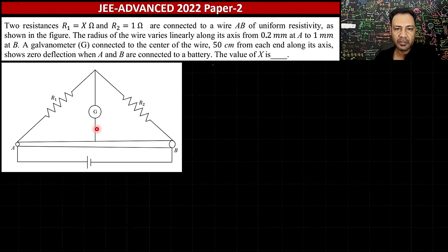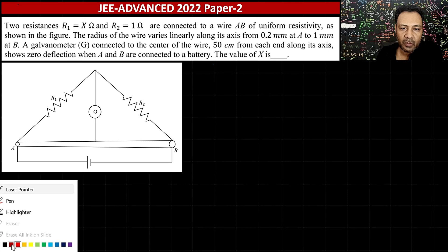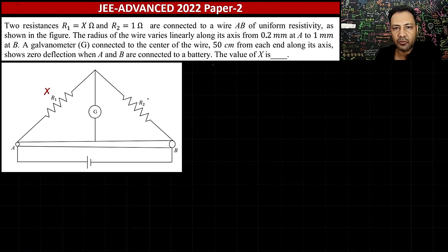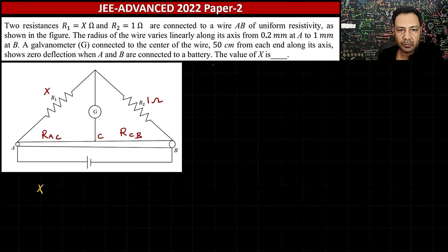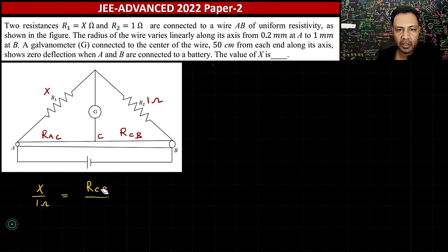We need to find the value of x. The galvanometer end is equidistant from both ends A and B at 50 cm, so the total length of wire AB is 1 meter. R1 = x ohm (unknown) and R2 = 1 ohm. Let C be the midpoint of wire AB; resistance from A to C is R_AC and from C to B is R_CB. Since the galvanometer shows no deflection, this is a balanced Wheatstone bridge, so x/1 = R_AC/R_CB, meaning x = R_AC/R_CB.